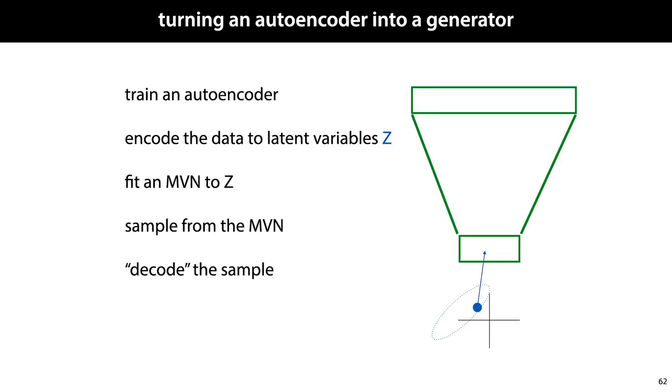Now we don't know beforehand where in the latent space the data is going to end up. But after training, we can just check. We train an autoencoder. We encode the data to latent variables, z.